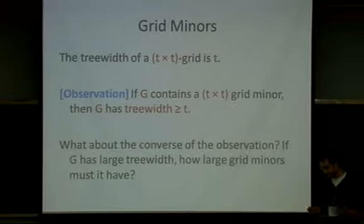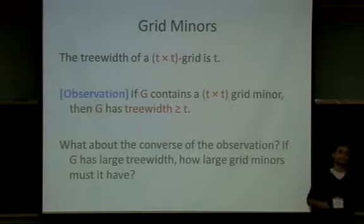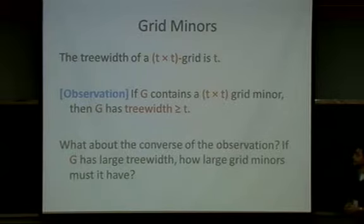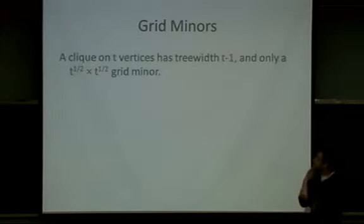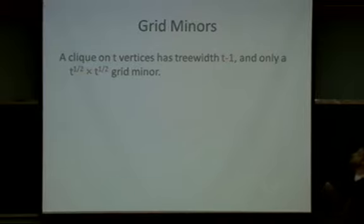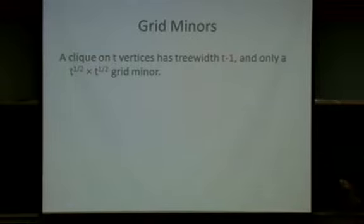However, you can ask approximate variants of this question. If you have tree width 500, does it mean that you contain a grid of size √500? A more concrete counterexample: a clique on T vertices has tree width T−1 and only a √T×√T grid minor, because a T×T grid needs T² vertices to live. So in a clique of T vertices, there is only a √T×√T grid minor.